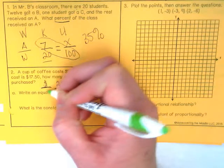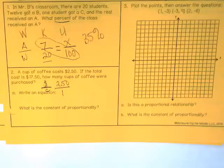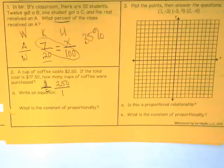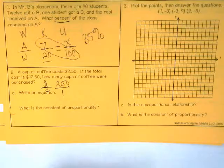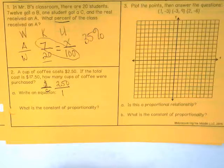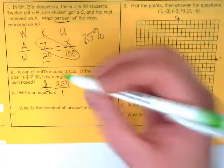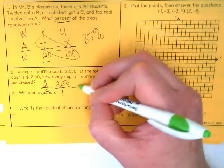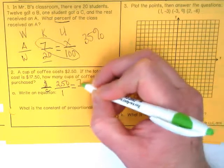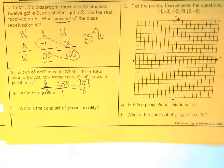If the total cost is seventeen fifty, how many cups of coffee were purchased? I saw a lot of people who just set this up as a division problem, which is the action I'm going to take to solve it. But to show this as a proportion, I would put the seventeen fifty here and the X here.